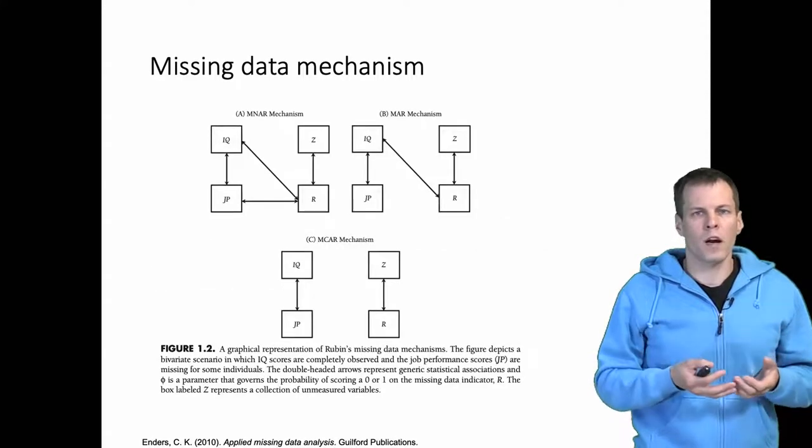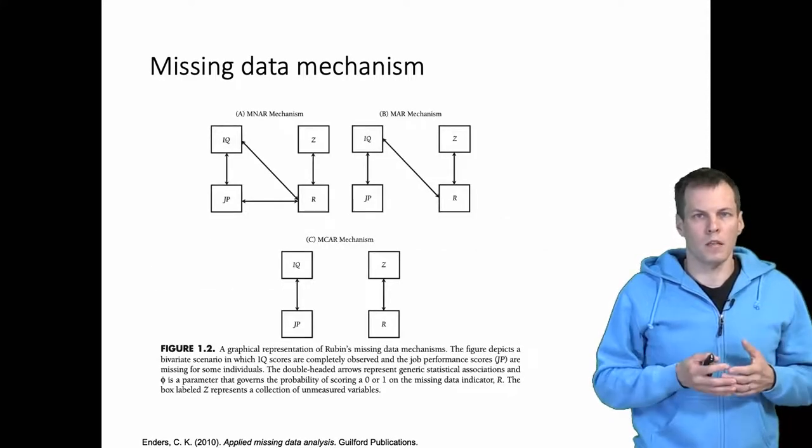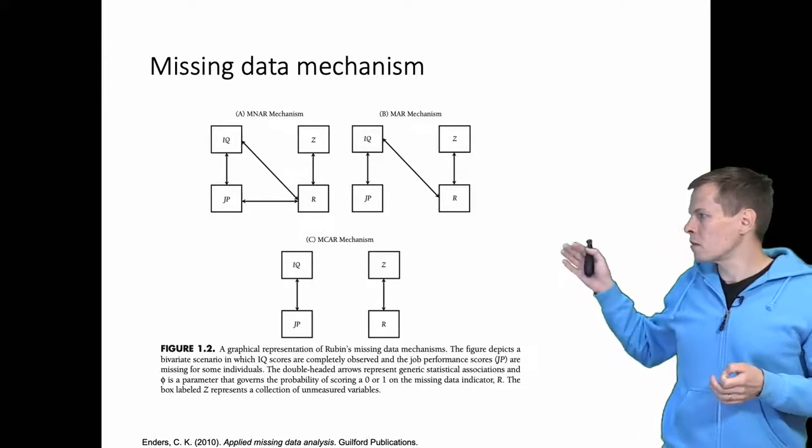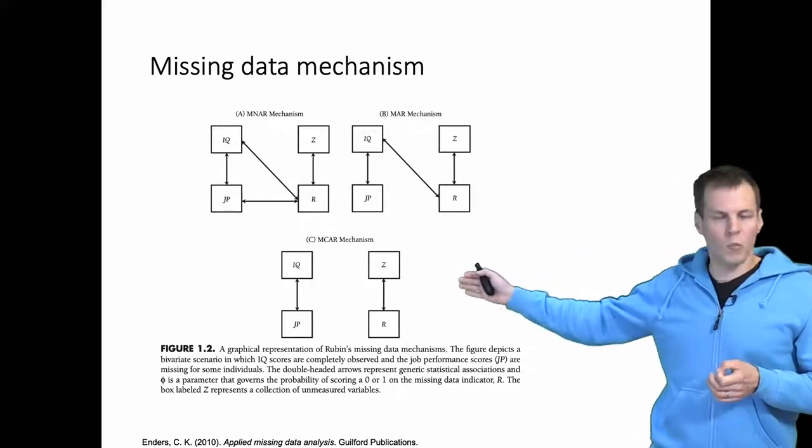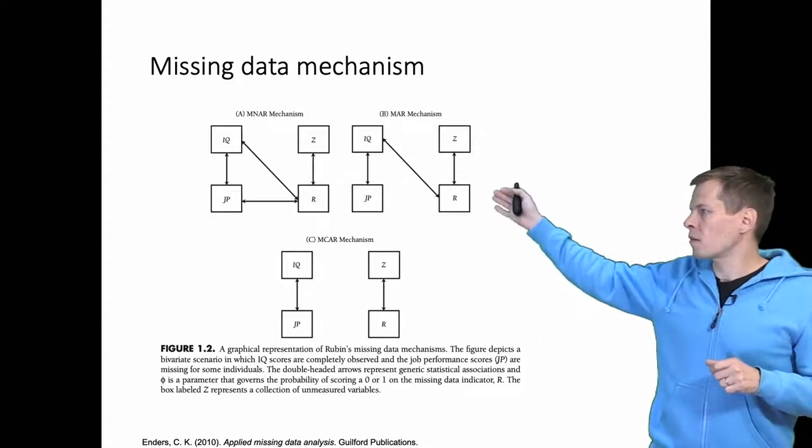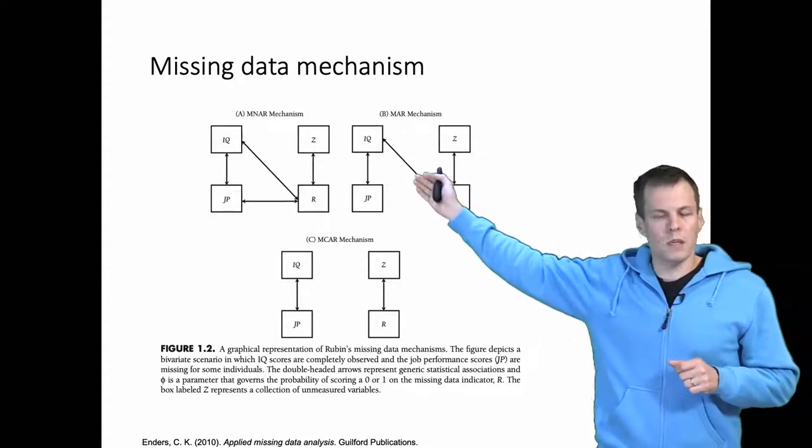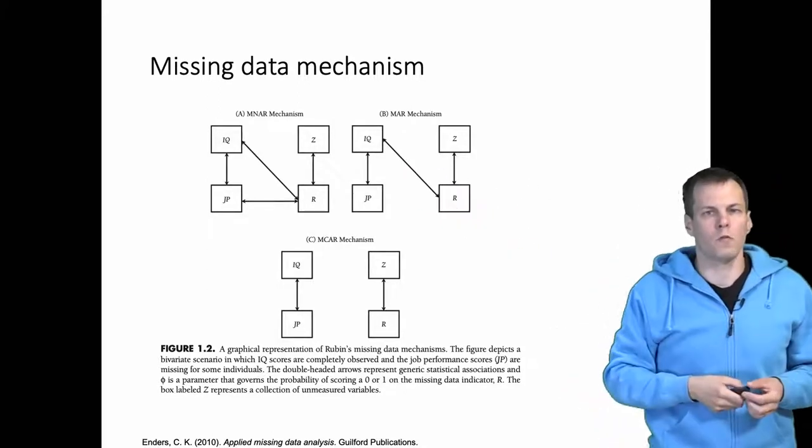The idea of an auxiliary variable relates to the missing data mechanism. The missing data mechanisms that we have are missing completely at random, which is not problematic, we have missing at random, and then we have missing not at random. Missing not at random is of course the most problematic.